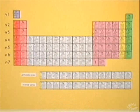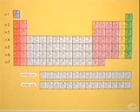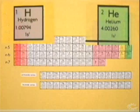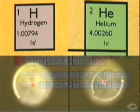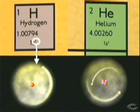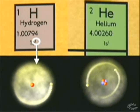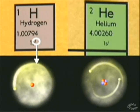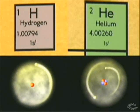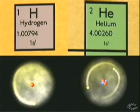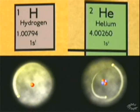The first energy level can only take two electrons, and the first row of the periodic table has only two elements: hydrogen and helium. Hydrogen only has one electron, but the energy level can take two electrons. As a result, hydrogen is a relatively unstable element and often interacts with other elements.